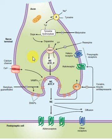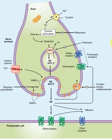The key facts to understand here are that the adrenergic receptors use adrenaline, epinephrine, noradrenaline, or norepinephrine, and sometimes dopamine. These neurotransmitters originate from an amino acid called tyrosine, which is the precursor of these neurotransmitters.